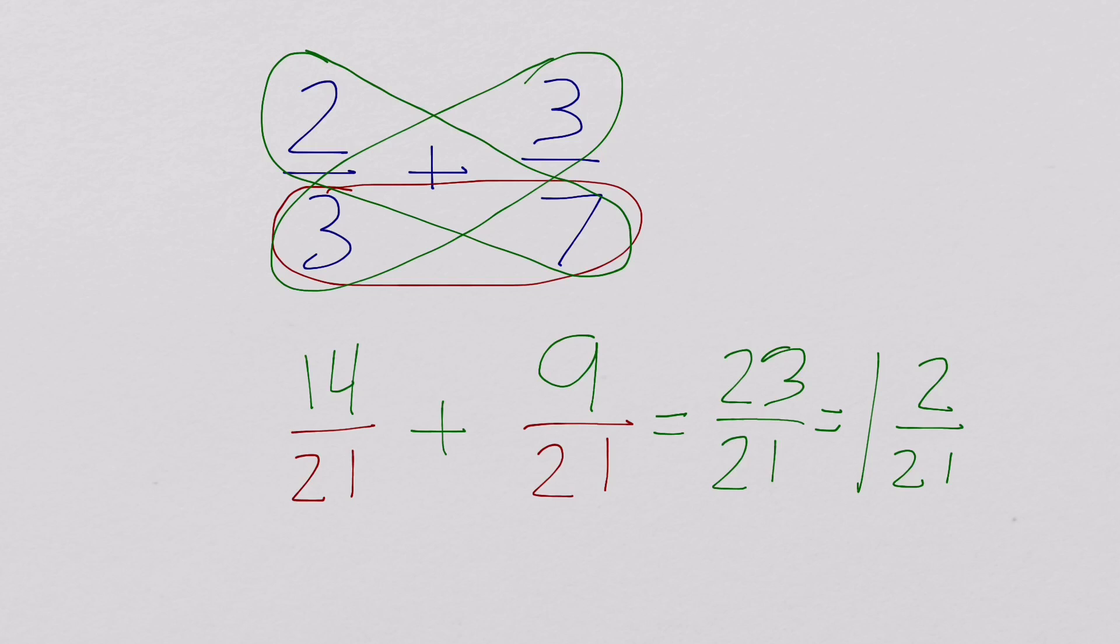That's really all there is to the cross-multiplying method when we're trying to add fractions together. Let's try another example, though, to see why it helps, but why it might not always be the best choice.